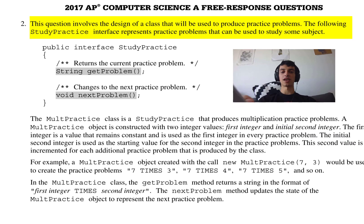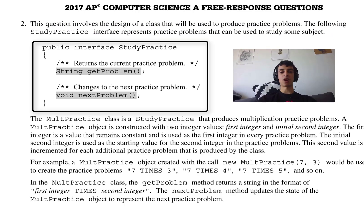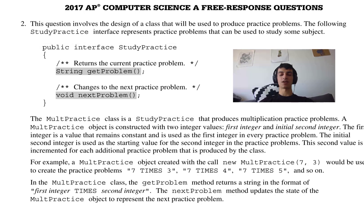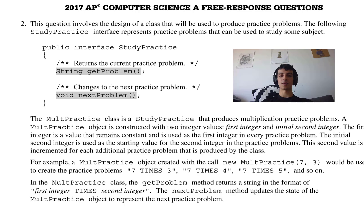The other one was more about your algorithmic skills — how you can use loops to traverse over numbers or array lists. But this one is a lot more about your class designing skills, and it will really test how good you are at turning abstract ideas into code via objects. They give us an interface with two methods, getProblem and nextProblem, and if you implement an interface, you have to implement those methods.